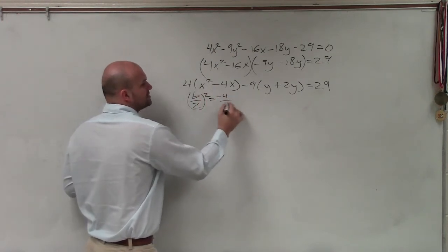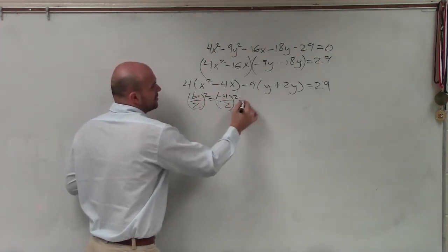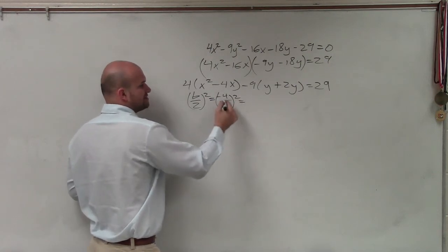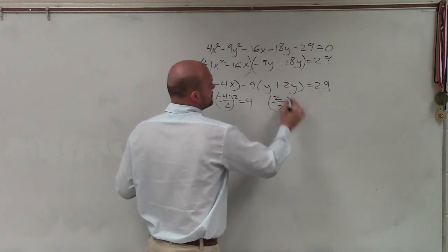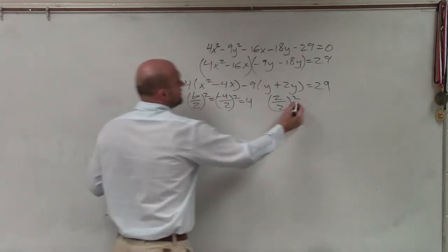So I take negative 4 divided by 2 and square it, which equals negative 4 divided by 2, which is negative 2, which equals 4. And then over here, I take 2 divided by 2 and square it. So that equals 1.